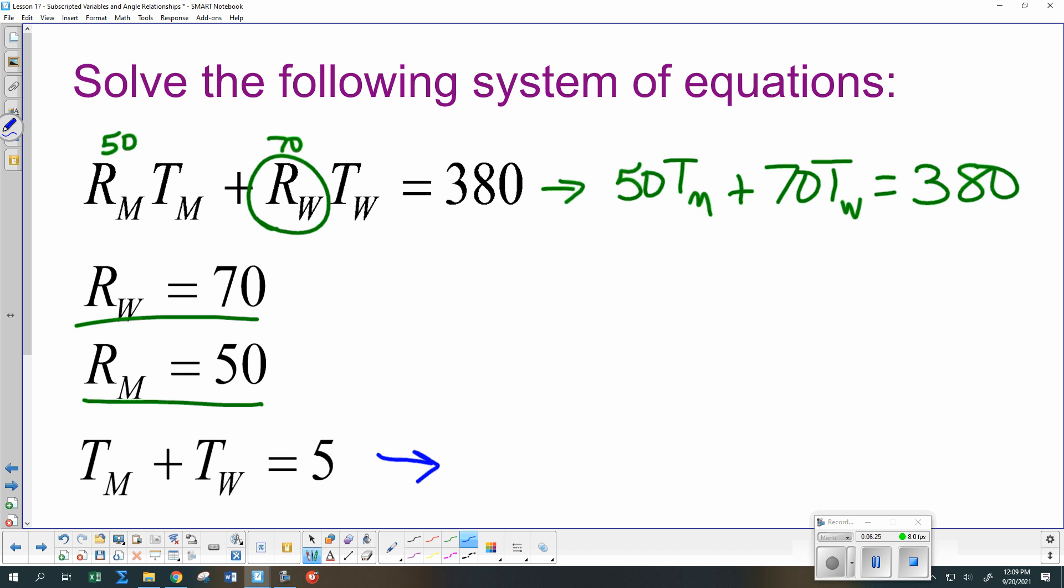I could. I'm getting some awful big numbers if I start doing that. But yes, I certainly could multiply the bottom one by negative 50. Anything I could do real quickly and easily to the green one to make it a little bit simpler? Multiply it by 1 tenth or divide everything by 10 on that one so that that could be 5 TM plus 7 TW is 38. Get some smaller numbers. I kind of like smaller numbers better.